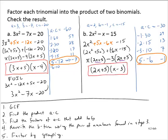Let me check with FOIL. 2x times x is 2x squared. 2x times negative 3 is negative 6x. 5 times x is 5x. 5 times negative 3 is negative 15. Combining the like terms gives a negative 1x, and that checks out.